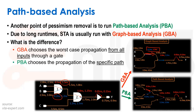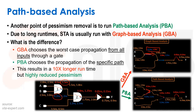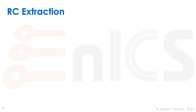In path-based analysis, we draw the real arcs and check timing through each and every possible arc. The problem is it takes about 10 times longer — an order of magnitude — to run. Graph-based analysis adds a lot of pessimism, so during sign-off we really should use PBA. You can use graph-based analysis for different types of optimization, but when doing sign-off, use PBA to make sure everything meets timing.